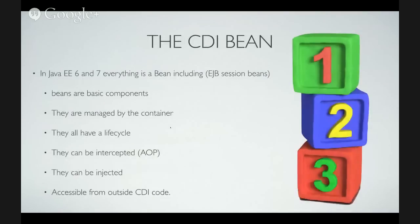What is a bean? In Java EE 6 and 7, everything is a bean, including EJB session beans — nearly all your classes in your application are beans. Beans are basic components managed by a container. The container provides a lifecycle for them and also provides services like interceptors, which allow you to add cross-cutting concerns on your components. Of course, beans can be injected in other components, or inject other components in them. CDI also provides a way to access these components from outside the CDI code.